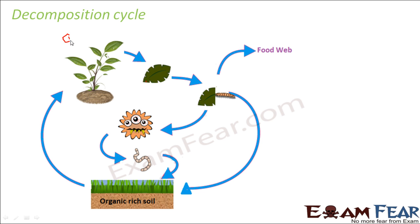We will mark the steps with numbers so we can understand the exact sequence. Starting with number one: a plant grows on the soil. In order for this plant to grow, it needs nutrients, water, and minerals — everything it gets from the soil. The soil provides everything required for the plant's growth. The plant grows into a huge tree, and then finally a time comes when this plant dies as well.